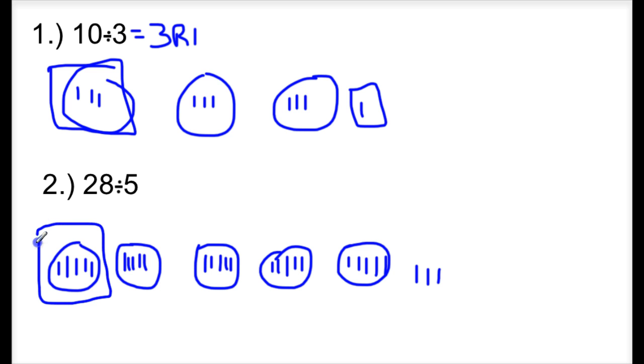So I'm going to look at what my quotient would be and what my remainder would be. So this would be my quotient, and this is going to be my remainder. So 28 divided by 5 is 1, 2, 3, 4, 5, 5, remainder 1, 2, 3.